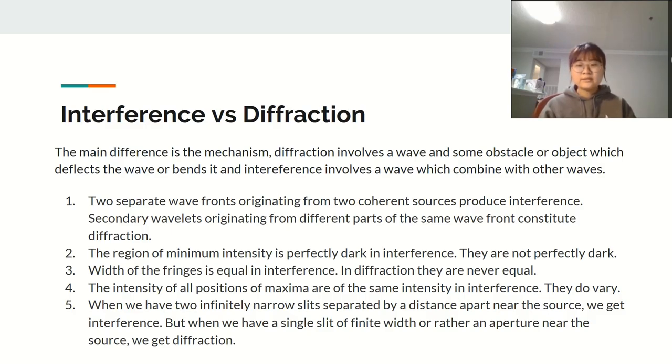Fourth, the intensity of all positions of maxima are of the same intensity in interference, but in diffraction they do vary. Lastly, when we have two infinitely narrow slits separated by a distance apart near the source, we get interference. But when we have a single slit of finite width or rather an aperture near the source, we get diffraction.